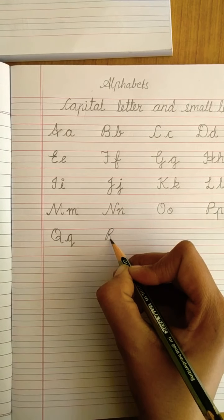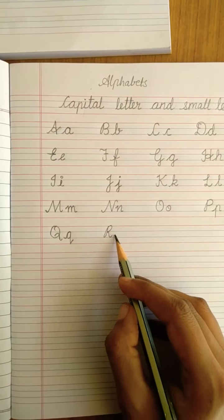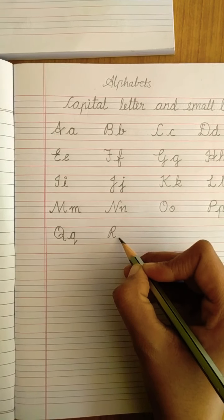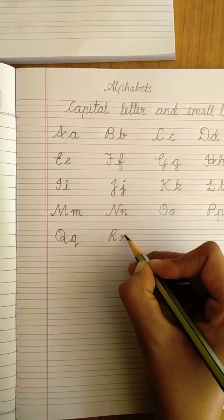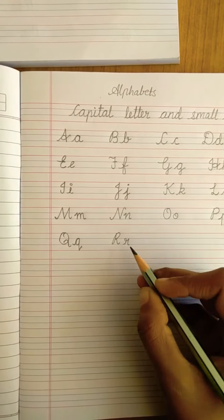Same like R, write R and just a line here. Small letter R. From second blue line, go up, make a round and come back here. R.